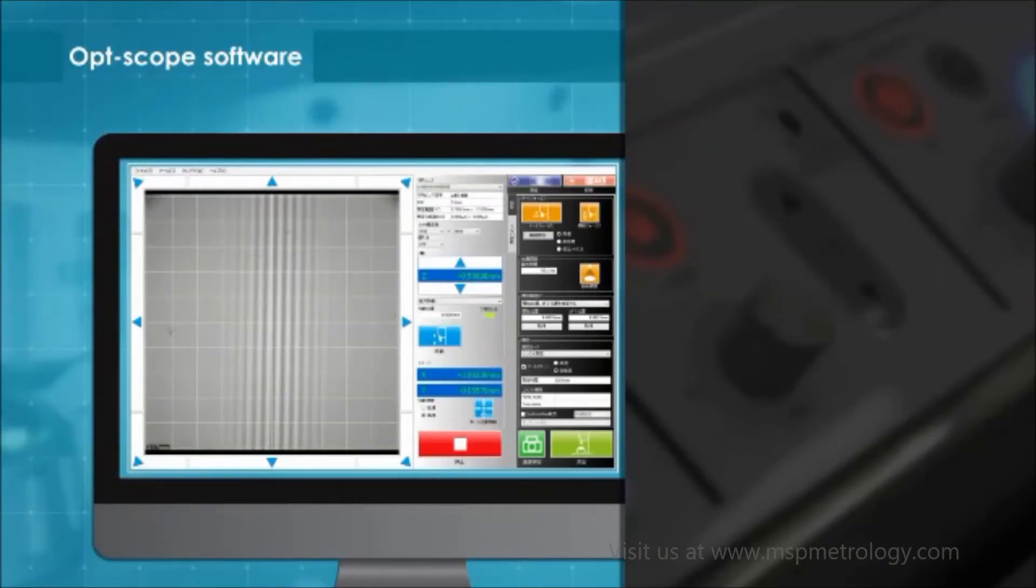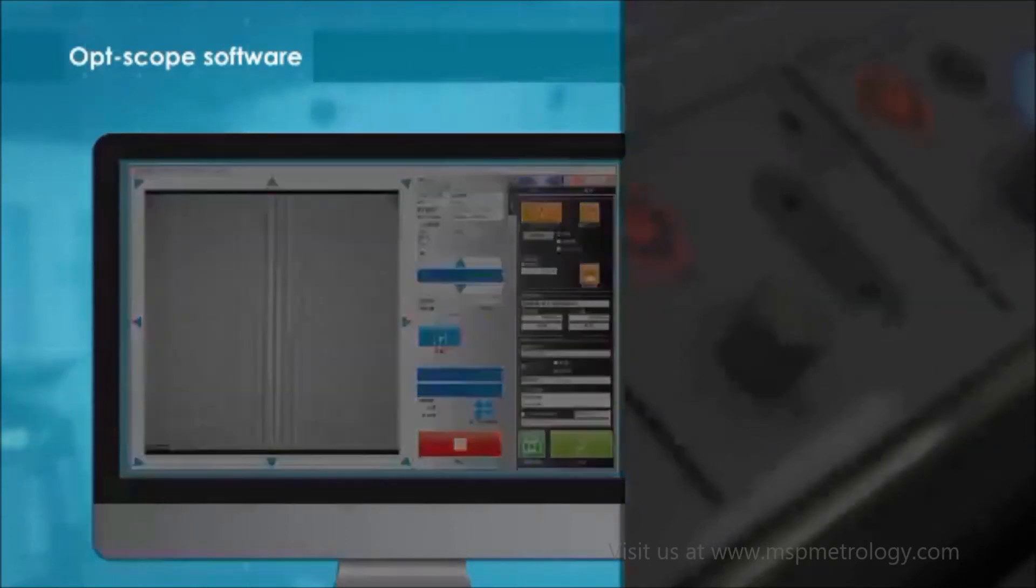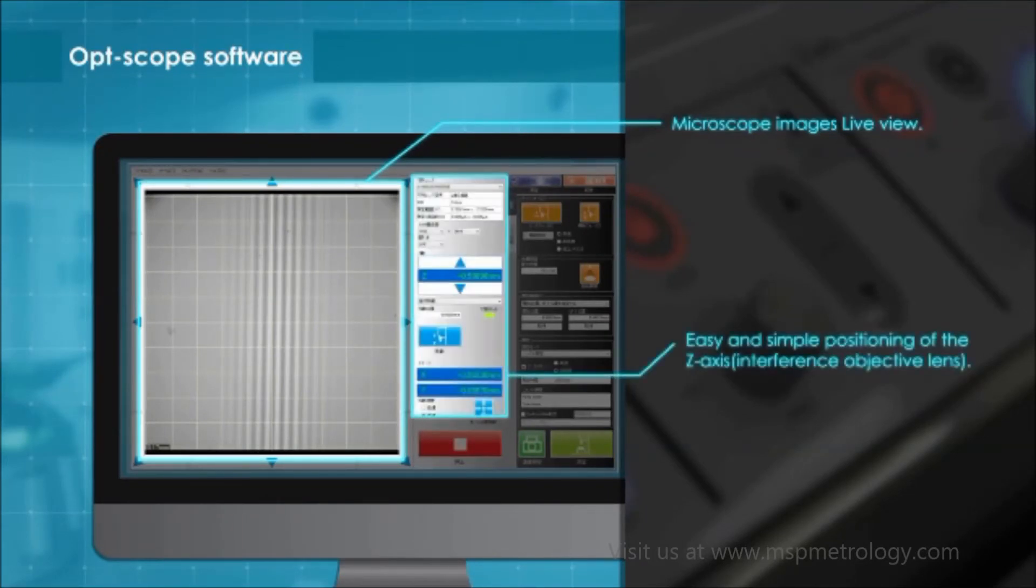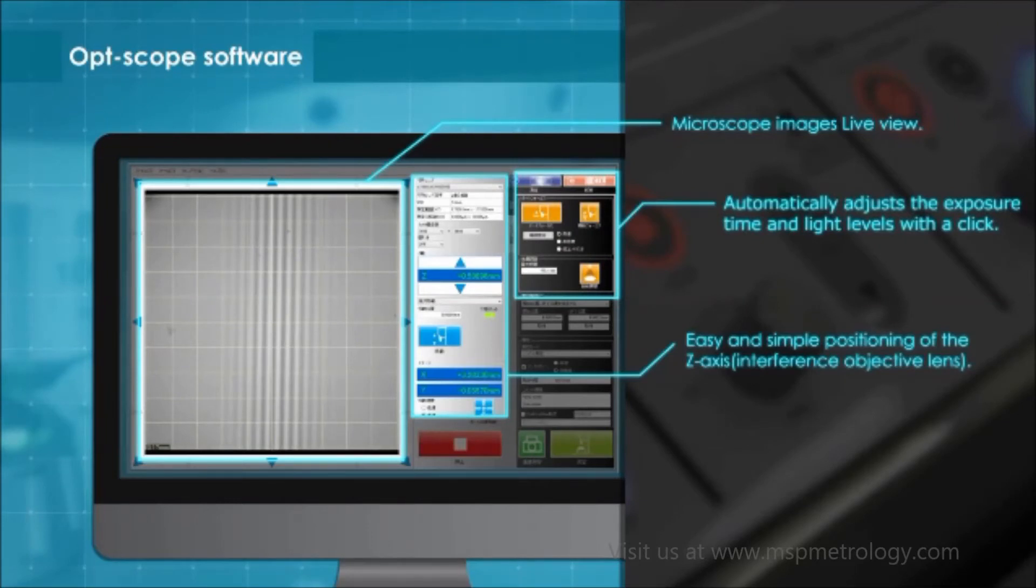Now here's an overview of the software. The measurement screen of the Optscope has a user-friendly interface that enables users to observe microscopic images in real-time, fine-adjust the objective lens, conduct one-click exposure, automatically adjust the amount of light, and set measurement conditions.